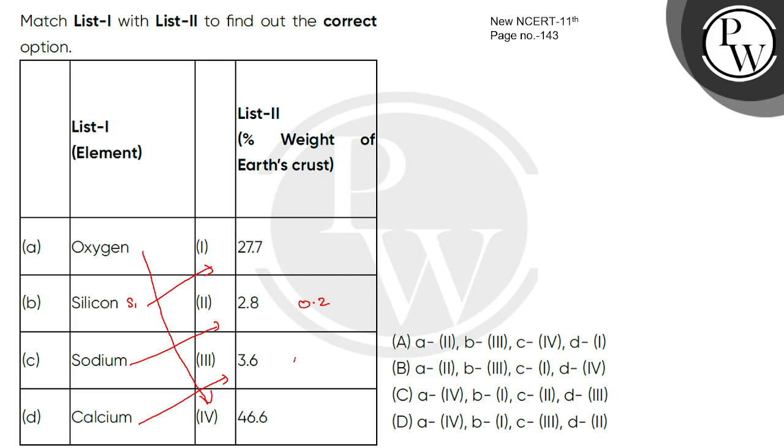Oxygen is 46.6% and human body is 65.0%. So what will be the correct option here?